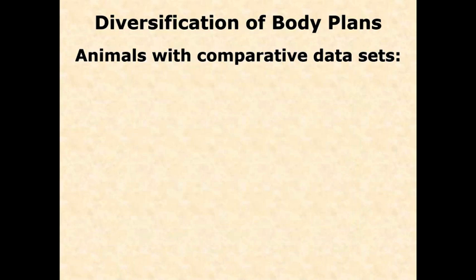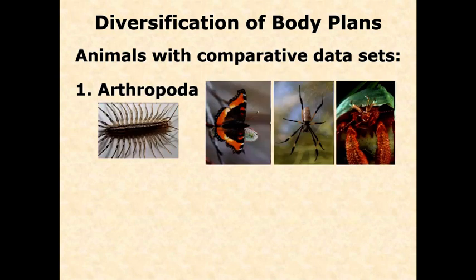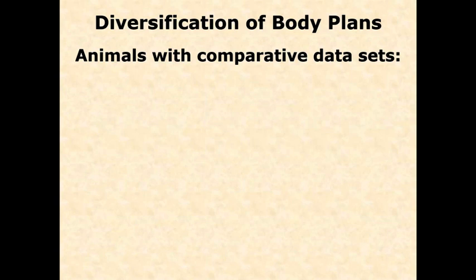If we're looking at comparative datasets, it's getting better. When I first put this slide together there really were only two, and it's getting a little bit better, but still these two have by far the best comparative datasets. We've got arthropods, and we basically have chordates, or more particularly vertebrates. We're going to spend this discussion talking about arthropods, and the next one looking at chordates and in particular the vertebrates.